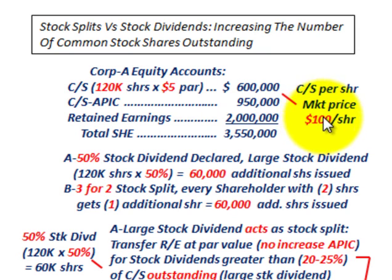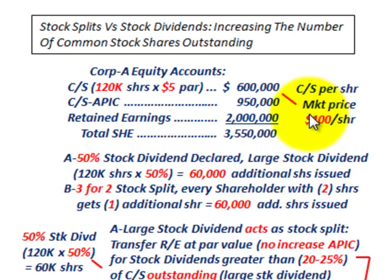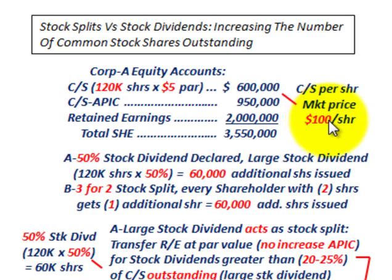The board of directors says that's a little high — they want to get that market price down so they can distribute shares to the public at a cheaper price. So they're going to do a stock dividend or a stock split to increase the number of shares, which would ultimately reduce the market price per share on their common stock. There may be many other reasons, but just go under that premise.